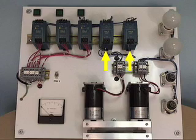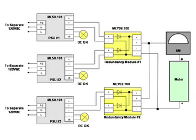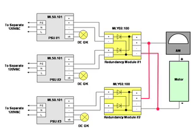These two modules over here are dual input decoupling diodes, or redundancy modules. The panel is wired per the following schematic. The output of power supply number one goes to the first input of the redundancy module. The output of power supply number two goes to the second input of the redundancy module. The output of power supply number three goes to the first input of the second redundancy module, and since we do not have a fourth power supply, the second input of that redundancy module is left unused. The outputs of the modules are tied together to make one common bus, and then pass through the ammeter on the way to the motor.